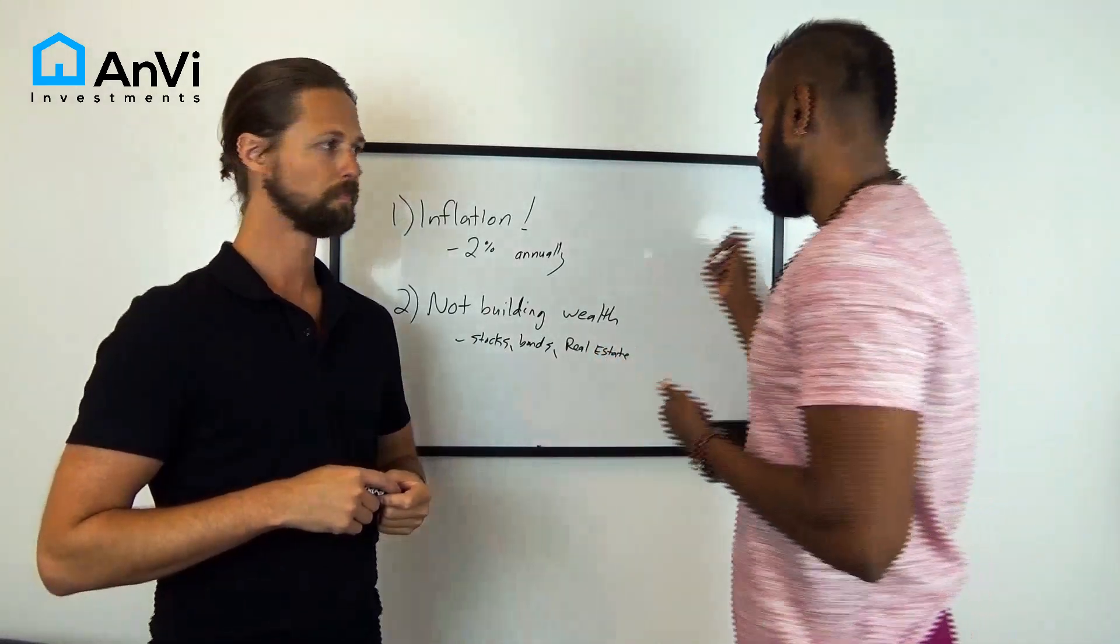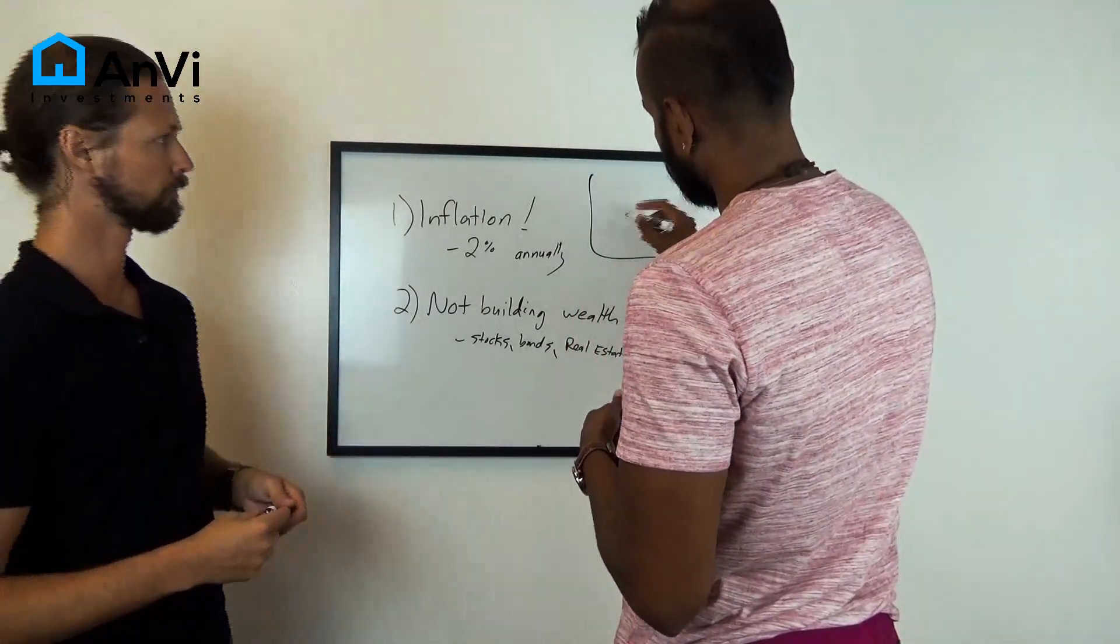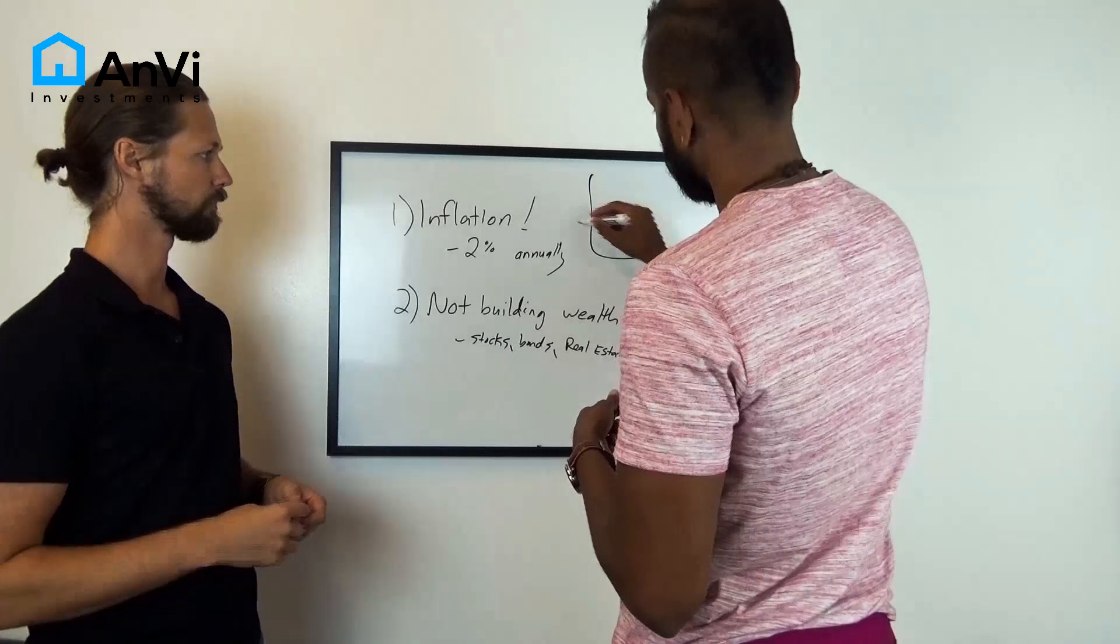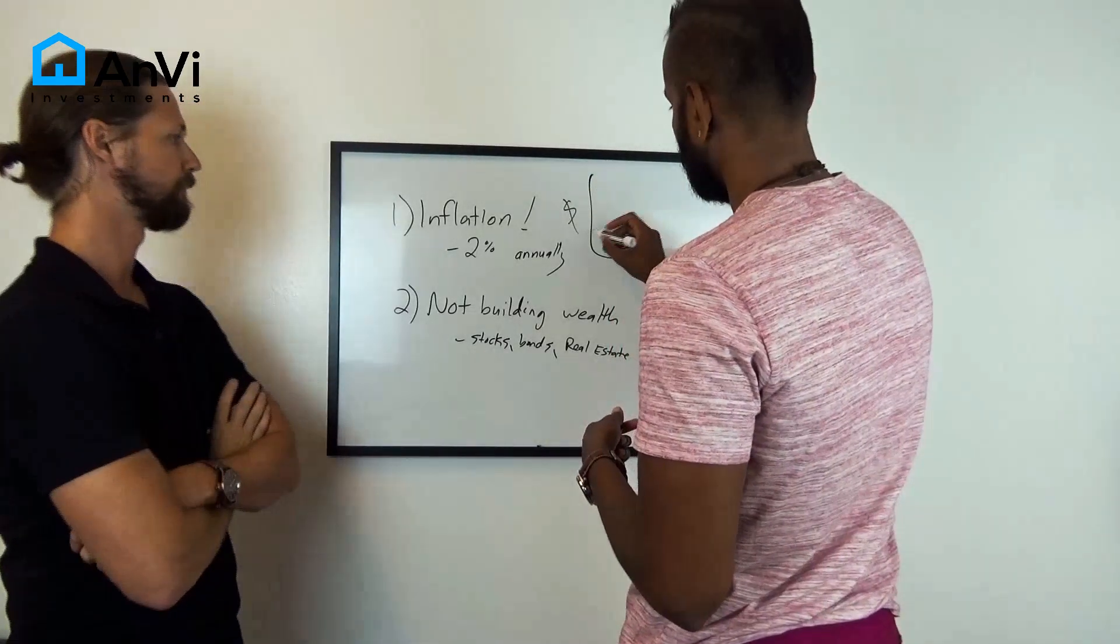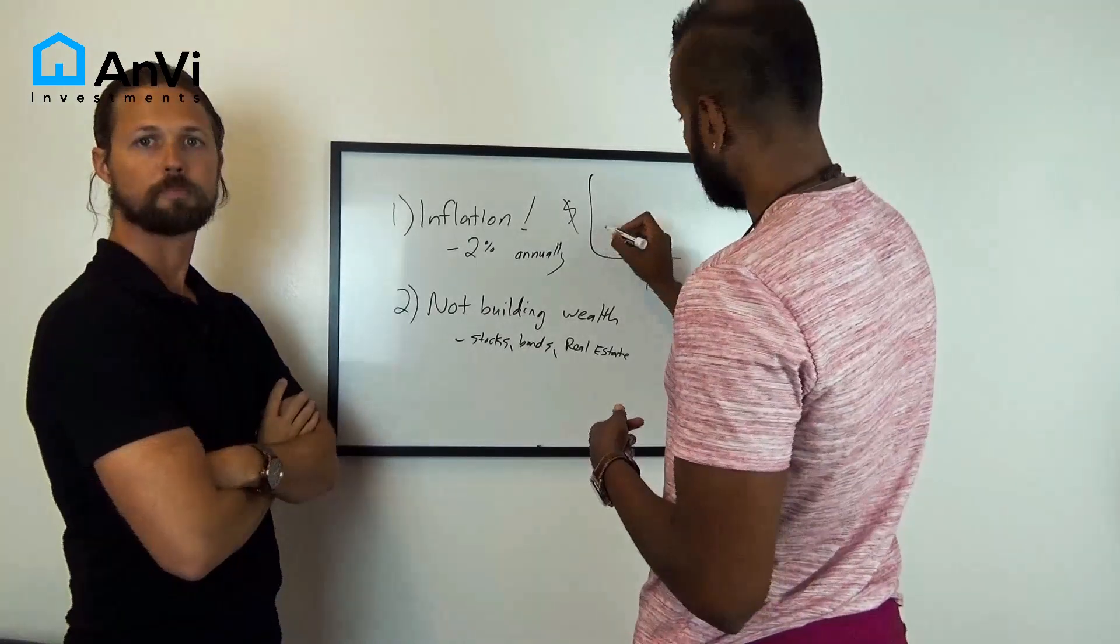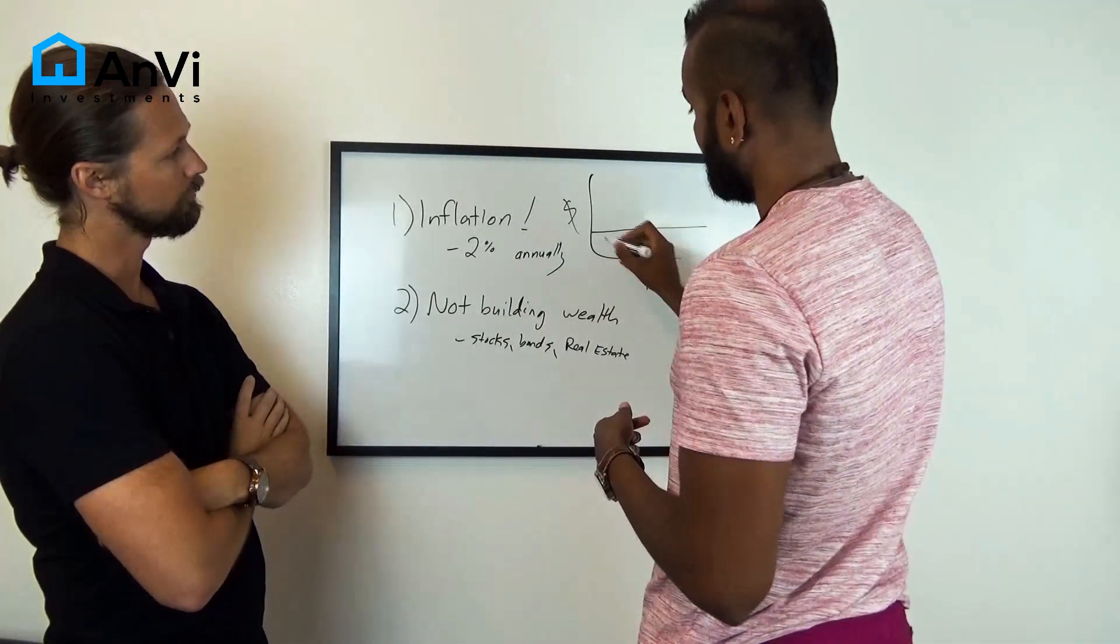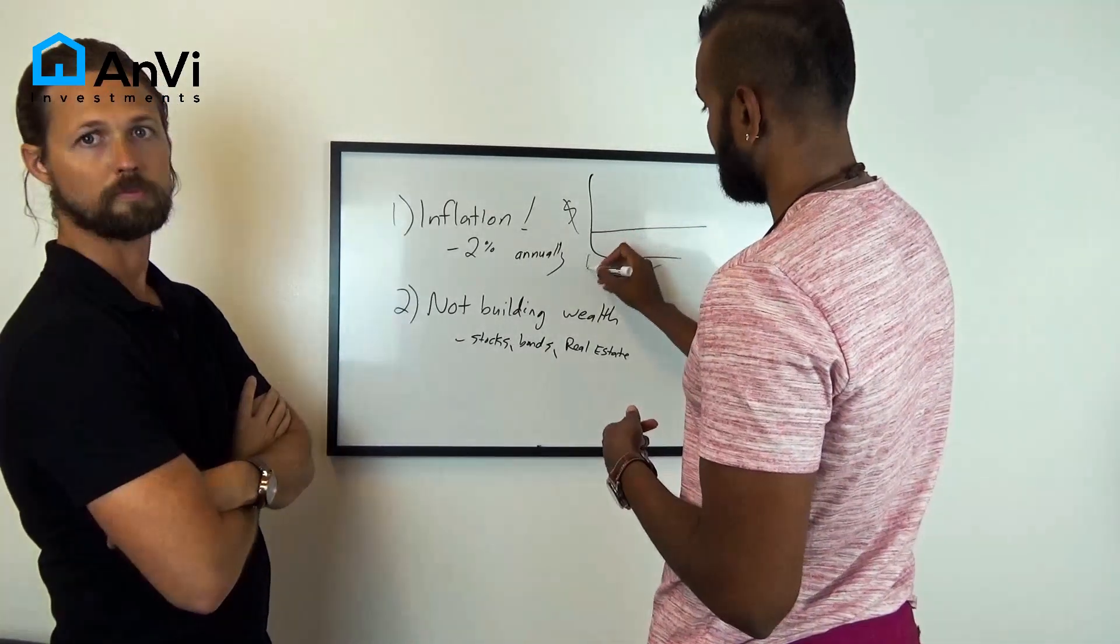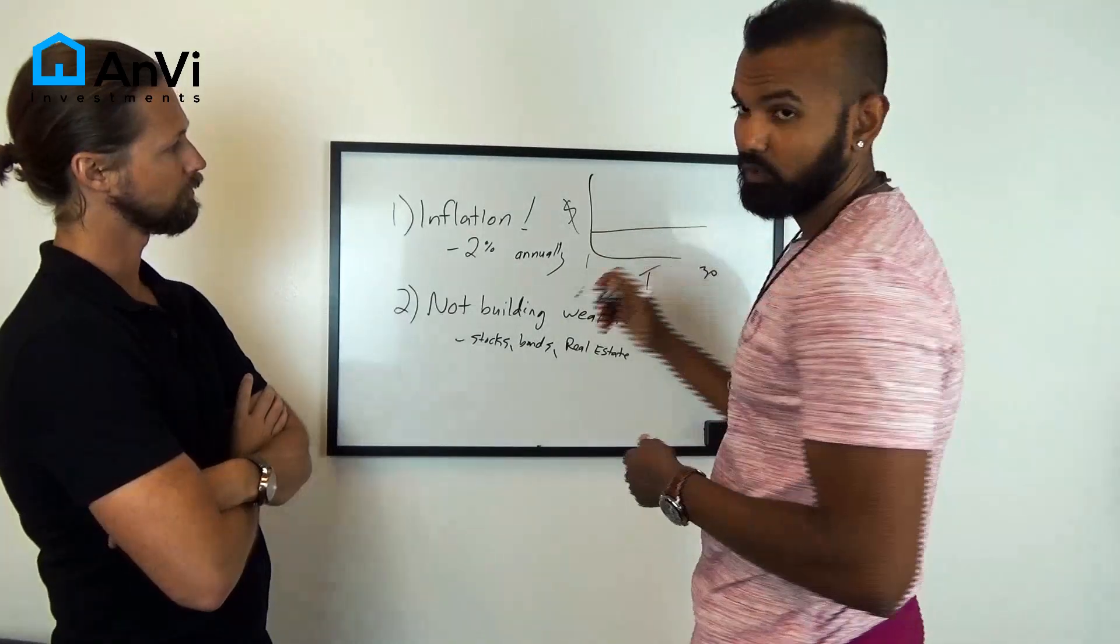So you buy the property. Let's say you buy the property, and this is time, this is value of the house. Your mortgage payment is going to always stay the same, so this is year one, this is year 30. The mortgage payment is the same.